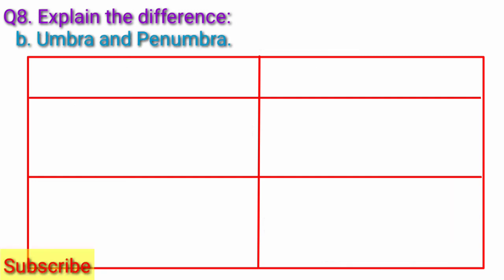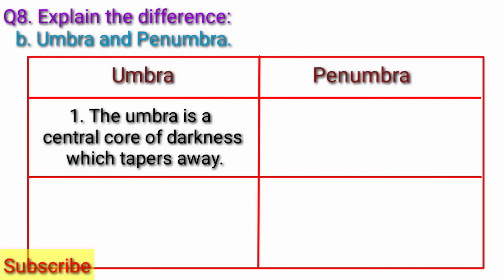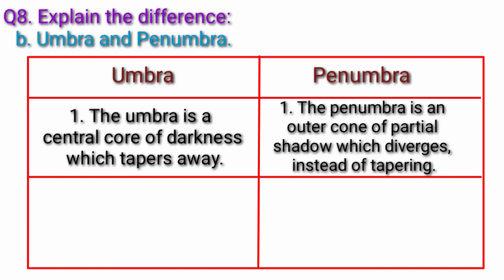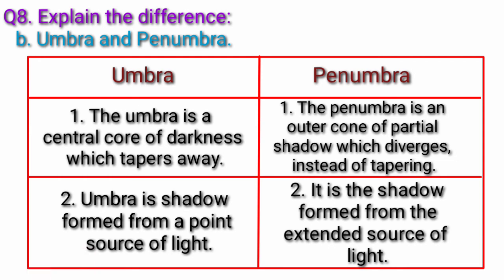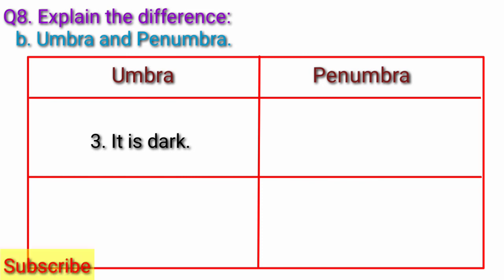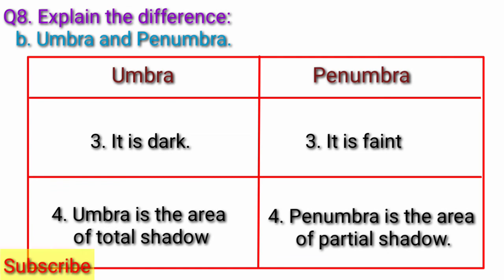Question B: Umbra and penumbra. Answer: The umbra is a central core of darkness which tapers away. The penumbra is an outer cone of partial shadow which diverges instead of tapering. Umbra is the shadow formed from a point source of light; penumbra is the shadow formed from an extended source of light. Umbra is dark; penumbra is faint. Umbra is the area of total shadow; penumbra is the area of partial shadow.